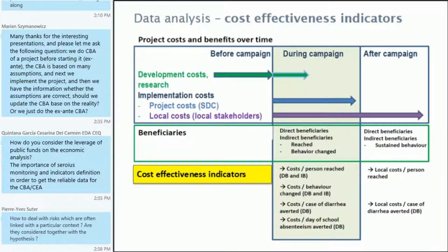These are some cost-effectiveness indicators. Looking at the project, we decided that cost-benefit analysis would not make sense because it's almost impossible to attribute a value to hand-washing as such — what is the value of a child that is properly washing his hands at critical times? So it's easier to look at the costs and then to calculate costs per unit of outcome.